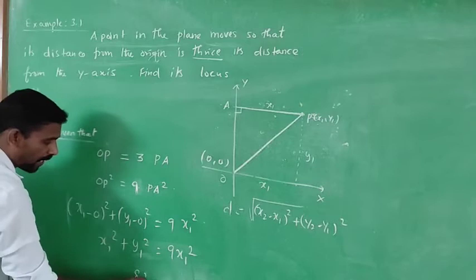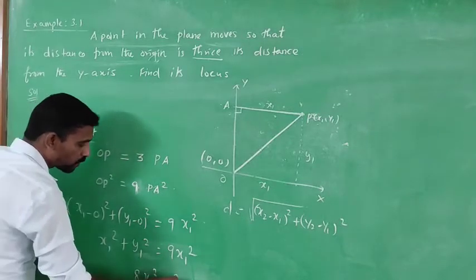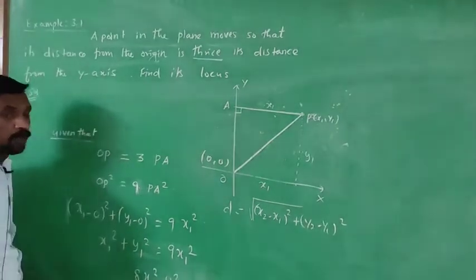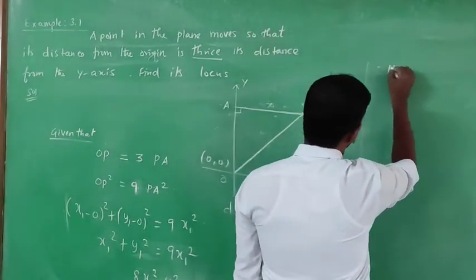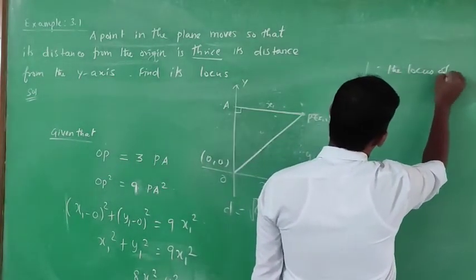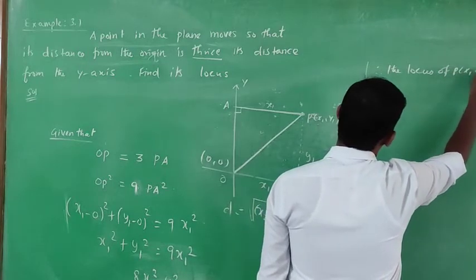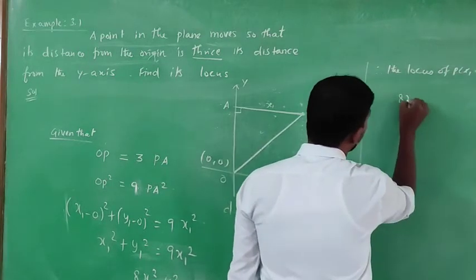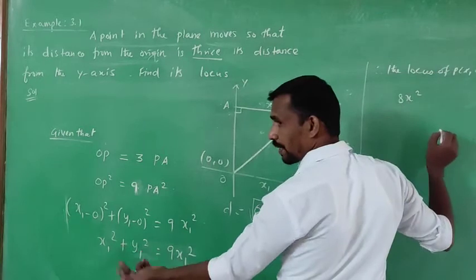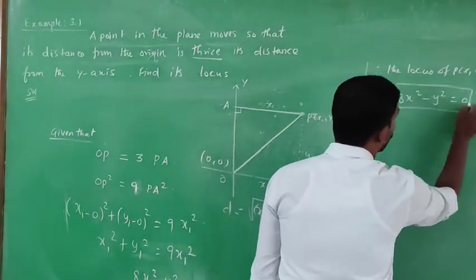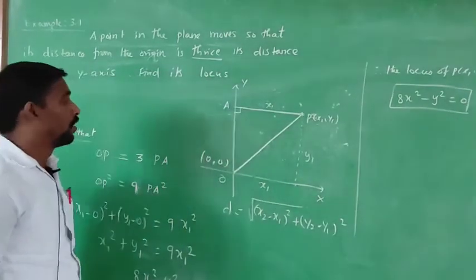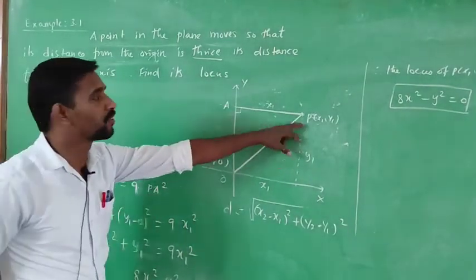Rearranging: 8x1² - y1² = 0. Therefore, the locus of P(x1, y1) is 8x² - y² = 0, replacing x1 with x and y1 with y.